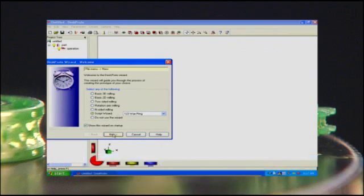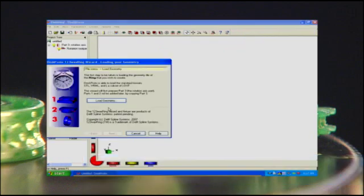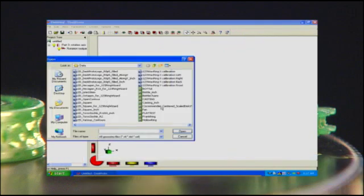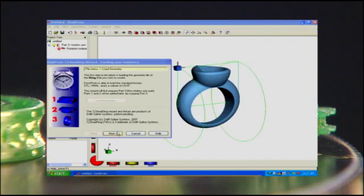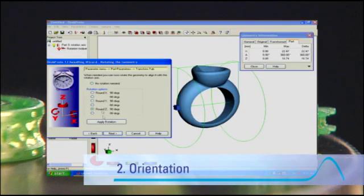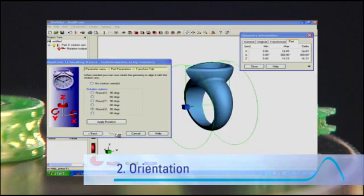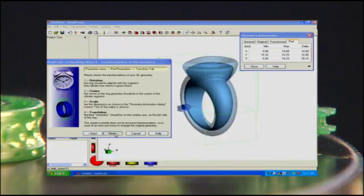The 123 wax ring wizard begins by opening this STL file and displaying the ring geometry. The ring needs to be aligned with the green cylinder, so it may be necessary to rotate the geometry.